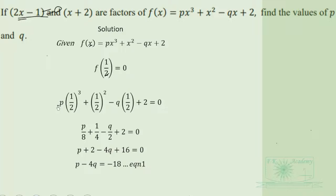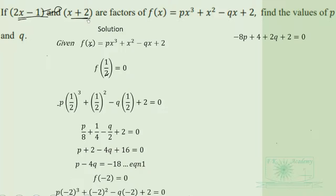Next, we form a second equation using the second factor. Since x plus 2 is a factor, f of negative 2 should equal 0. We substitute x equals negative 2 everywhere and simplify, then rewrite in standard form to obtain negative 8p plus 2q equals negative 6.